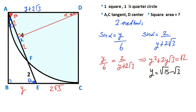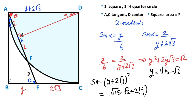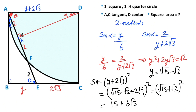Therefore, the square area equals (y plus 2 root 3) squared. Since y equals root 15 minus root 3, we get (root 15 minus root 3 plus 2 root 3) squared, which simplifies to (root 15 plus root 3) squared, equaling 15 plus 2 root 45 plus 3, which gives a square area of 18 plus 6 root 5 square units.